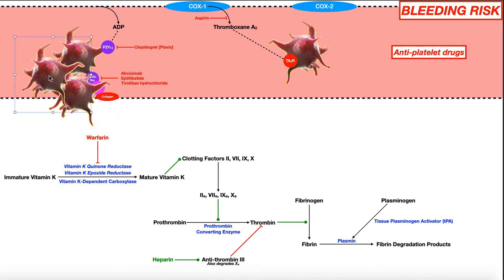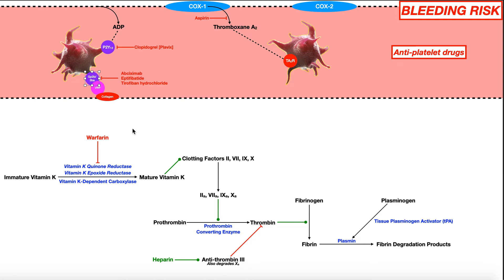From there you get platelet adhesion and aggregation and all the other events we talked about. If we want to prevent this process, it makes sense to inhibit that glycoprotein. There are a few drugs that inhibit glycoprotein 2B and 3A. They don't actually act on glycoprotein 1B, but all of those glycoproteins are necessary to facilitate binding to von Willebrand factor and therefore collagen. Using these inhibitors means the glycoprotein will be unable to bind von Willebrand factor, and the platelet will not be able to stick to the vessel walls.